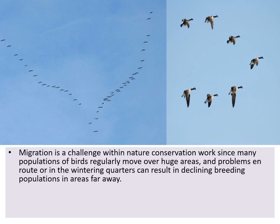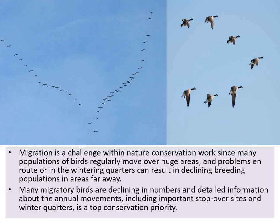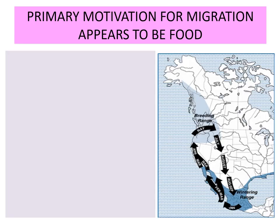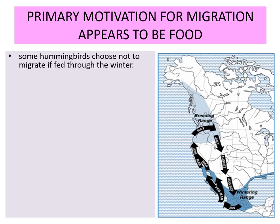Migration is a challenge within nature conservation work since many populations of birds regularly move over huge areas. Problems along the route or in the wintering quarters can result in declining breeding populations in areas far away. Many migratory birds are declining in number, and detailed information about annual movements, including important stopover sites and wintering quarters, is a top conservation priority. The primary motivation for migration appears to be food — some hummingbirds choose not to migrate if fed through the winter.